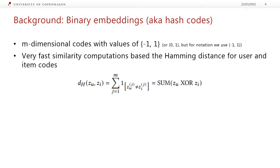Binary embeddings are also known as hash codes. In this case, we focus on n-dimensional codes with values of either minus 1 or 1. In the Hamming space, we can do very fast similarity computations using the Hamming distance between a user hash code and the item hash code, which is simply the summation of the XOR operation applied on the two.